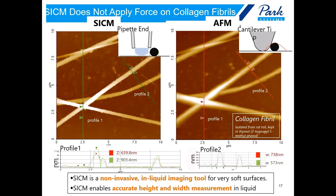Let's look at another example to understand the difference between AFM and SICM images using collagen fibers. Collagen is a group of naturally occurring proteins found in animals, especially in the flesh and connective tissues of mammals. It is very soft, even more delicate than a soft polymer. If we take a careful look at the height of the collagen, it is 903 nm in the SICM image, which is higher than the 639 nm measured in the AFM image. This is more evidence that SICM does not apply any force, or at least significantly less force than AFM. The collagens in the AFM images also look thicker than in SICM due to tip effects of the AFM cantilever.